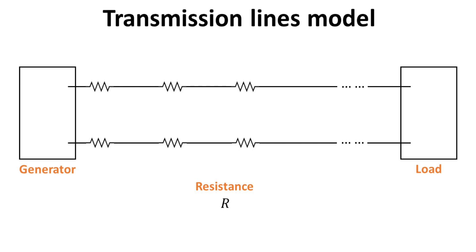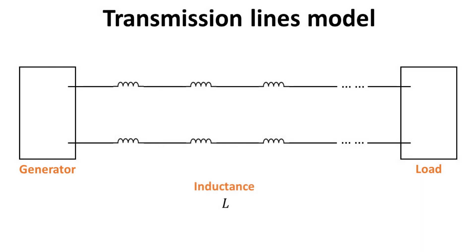First, wires are electrical conductors and should in general have finite resistance, whose value is given by Ohm's law. Second, electricity flowing through a wire will generate a magnetic field which produces an electromotive force that counteracts the current that produces it, an effect described by Lenz's law, and is characterized by a finite inductance.